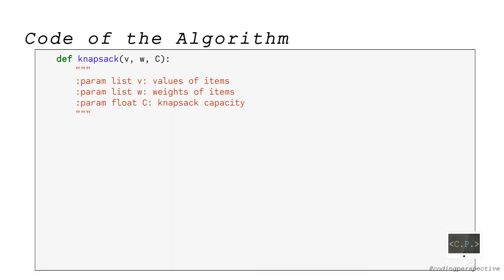Now, let's code this algorithm in Python by writing a function called knapsack. The inputs of this function are the values and weights of the items as lists and capacity as a float.